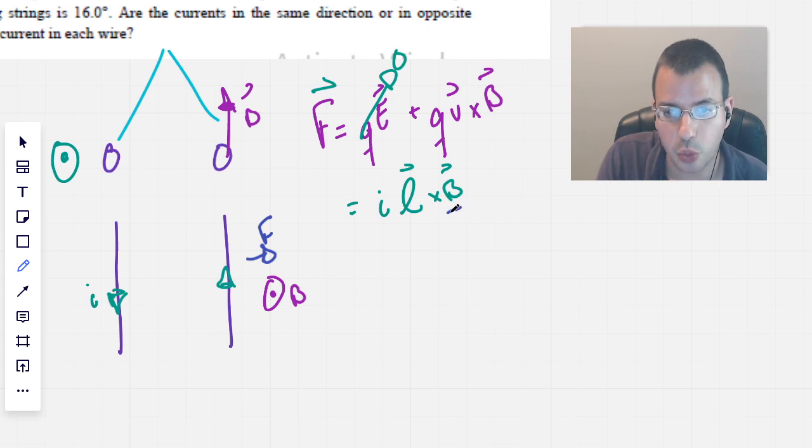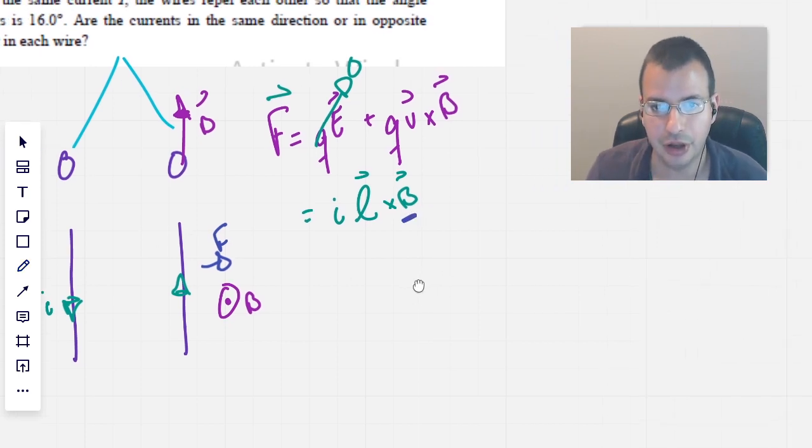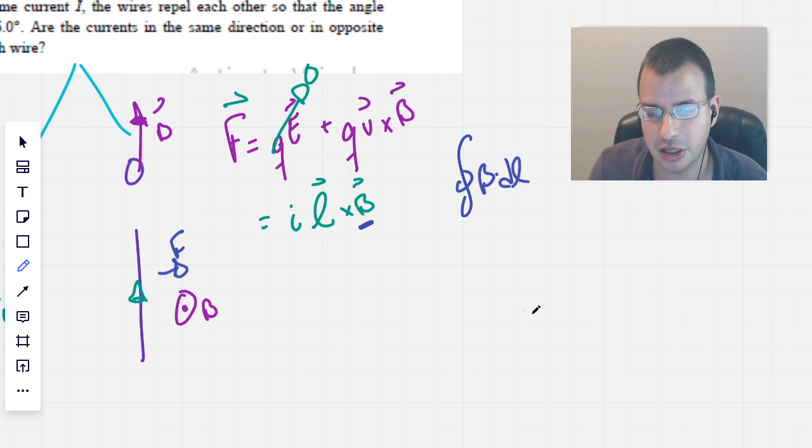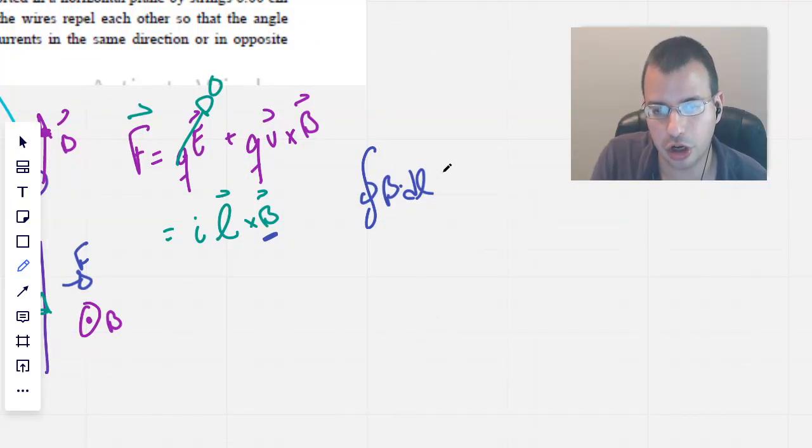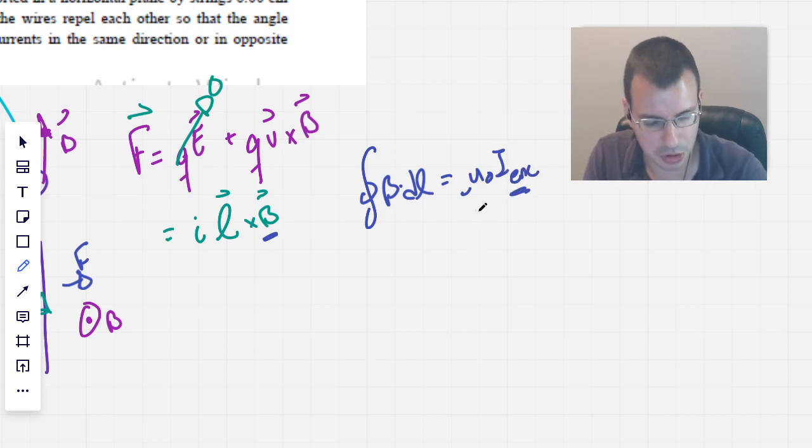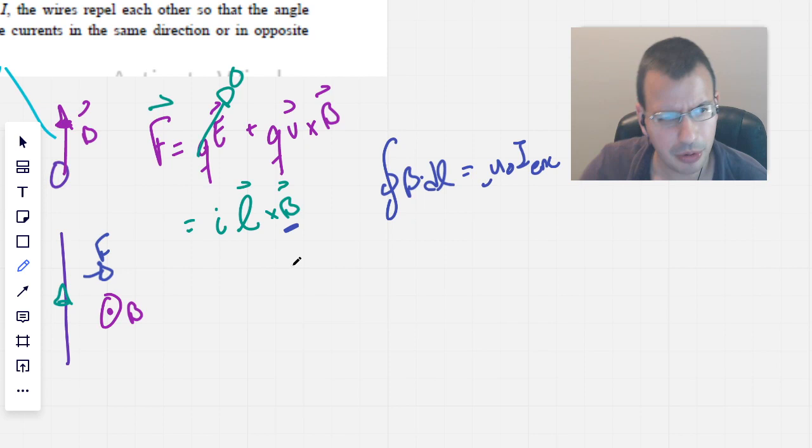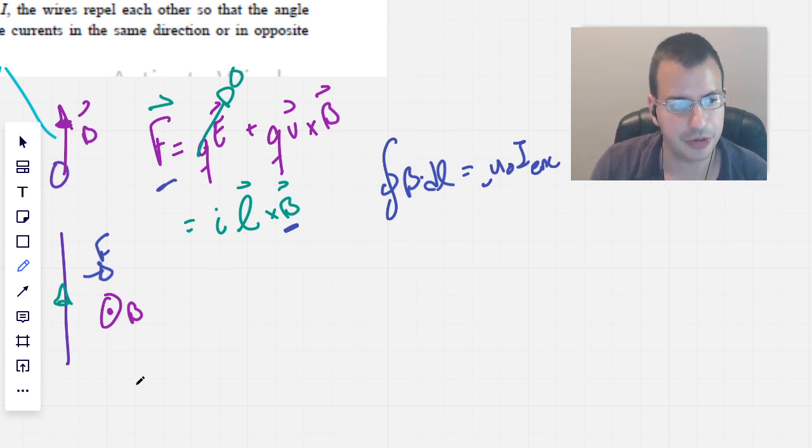The other part we need to know about is what's the strength of the magnetic field at this point here. That's going to be from the Biot-Savart law. Biot-Savart law is do a line integral over a closed loop. That will be mu naught I enclosed. This is the enclosed current. Mu naught is a constant, it's the magnetic permeability of free space, so it's like 1.257 times 10 to the negative 6. So look at this force here.